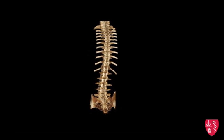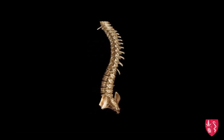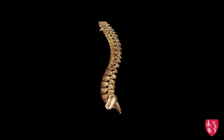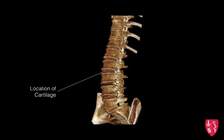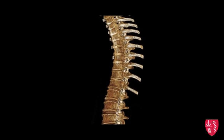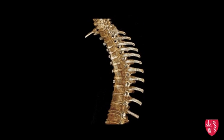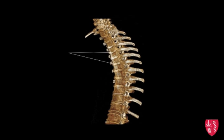Osteoarthritis is typified by joint inflammation resulting from cartilage degeneration. Cartilage lines the ends of bones where they come in contact with one another and can degenerate due to aging, heredity, and injury from trauma or disease. When cartilage thins, bones just beneath the cartilage thicken to absorb more impact, causing increased pain in these regions.